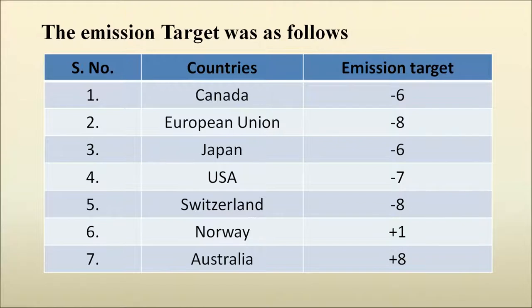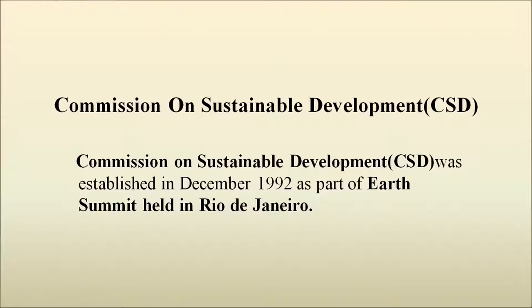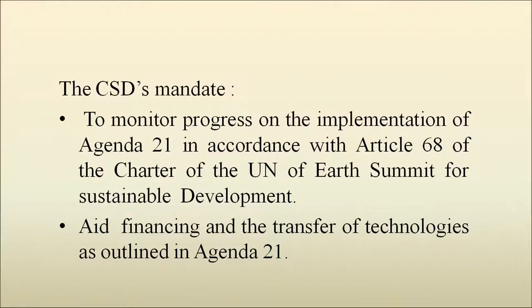The emission targets of different countries are given in the table: Canada had to decrease greenhouse gas emissions by 6%; the European Union and Switzerland by minus 8%; Norway, being a carbon-neutral country, was allowed a plus 1% increase; and Australia was allowed plus 8%. The Commission on Sustainable Development was established in December 1992 as part of the Earth Summit held in Rio de Janeiro. Its mandate is to monitor progress on the implementation of Agenda 21 in accordance with Article 68 of the UN Charter, and to aid in financing and transfer of technologies as outlined in Agenda 21.